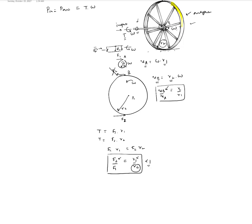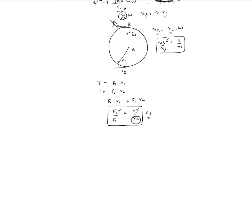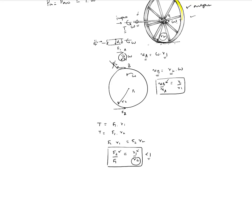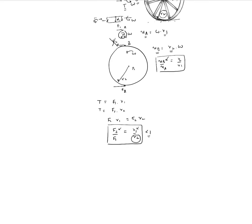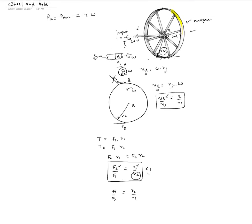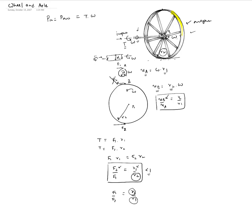To comfortably turn your car left or right, you need force magnification on the output, which is the axle. With the wheel as input, f1 over f2 equals r2 over r1. Because r2 is much larger than r1, this ratio is greater than one — you get a force magnification. For example, if r2 over r1 equals five, then f1 equals five times f2, giving a five-to-one force magnification.